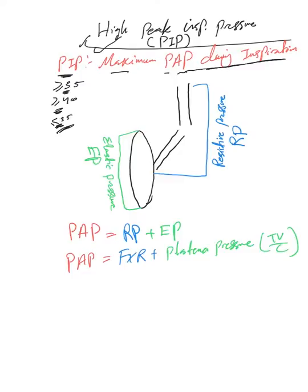The proximal airway pressure is equivalent to the resistive pressure (RP), which involves the airways only, plus the elastic pressure (EP), which involves the lung only. The resistive pressure equals flow multiplied by resistance. The elastic pressure is basically the plateau pressure, which equals tidal volume divided by compliance. Plateau pressure is the maximum alveolar pressure during inspiration.